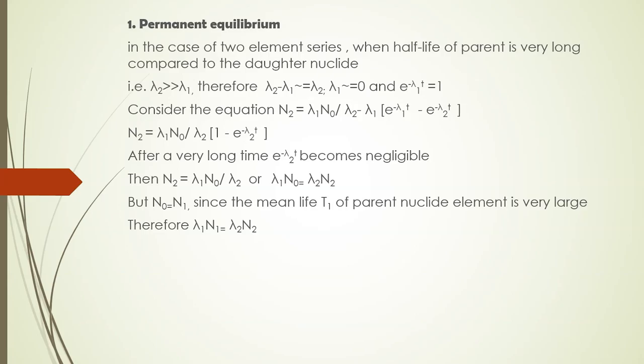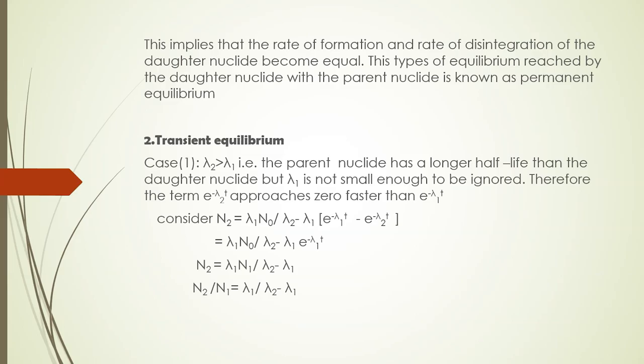Applying the above conditions, the equation becomes N₂ = λ₁N₀ / λ₂ × [1 − e^(−λ₂t)]. After a very long time, e^(−λ₂t) becomes negligible, so the equation simplifies to N₂ = λ₁N₀ / λ₂. Rearranging, we get λ₁N₀ = λ₂N₂. Since the mean life of the parent nuclei is very large, N₀ can be written as N₁, giving λ₁N₁ = λ₂N₂.